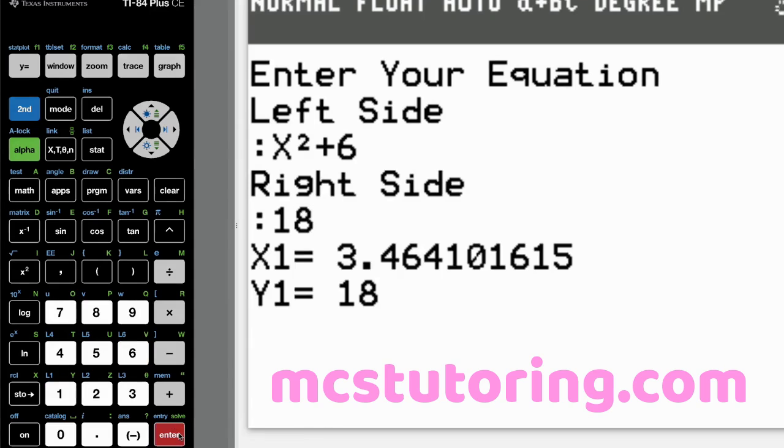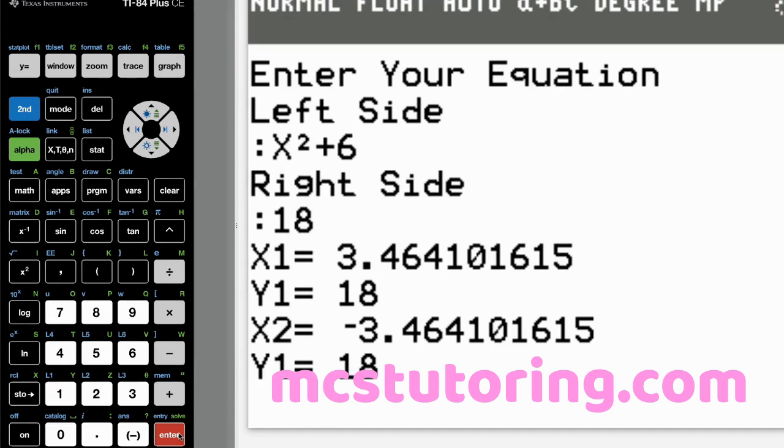And then bam, we get x1, 3.46, y1 is 18, x2 is negative 3.46, and y1 is 18.